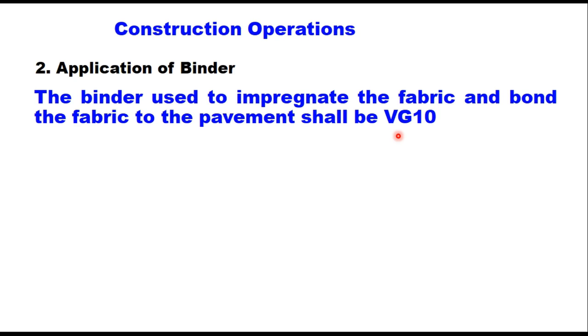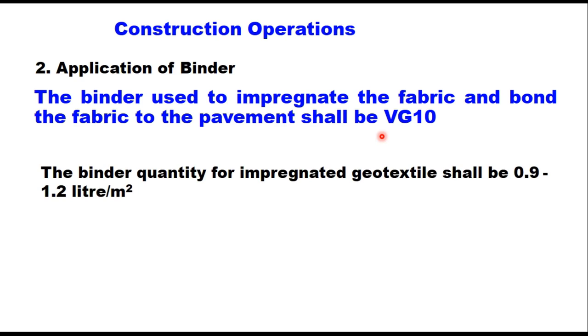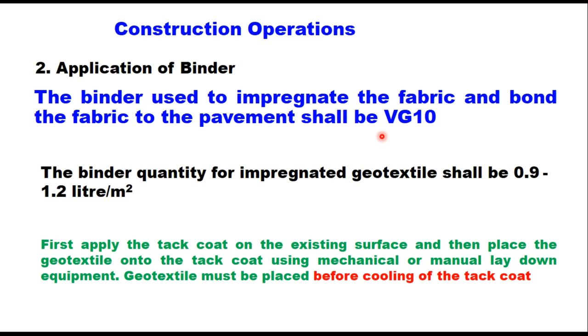The application temperature for modified binder shall be 160 to 170°C. The quantity of binder for SAM or SAMI will be as per type and width of the crack. The binder used to impregnate the fabric and bond the fabric to the pavement shall be VG-10, with binder quantity for geotextile of 0.9 to 1.2 liters per m². A tack coat is first applied on the existing surface, then the geotextile is placed onto the tack coat using mechanical or manual lay-down equipment before the tack coat cools.